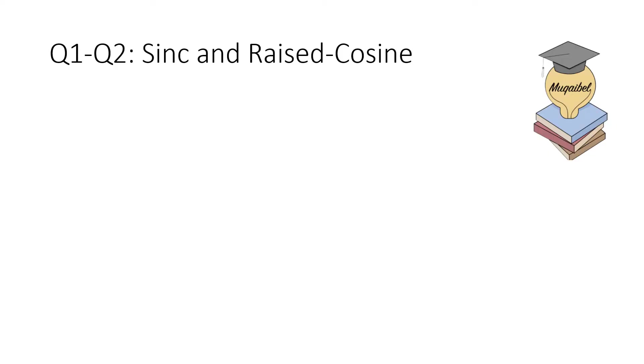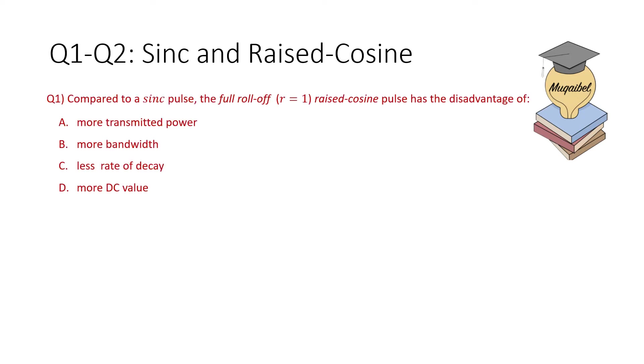Question number one and question number two are related to sinc and raised cosine. The first question: compared to sinc pulse, the full roll-off raised cosine, that's R equal to 1 pulse shape, has the disadvantage of: A. more transmitted power, B. more bandwidth, C. less rate of decay, or D. more DC value. Pick the correct answer.